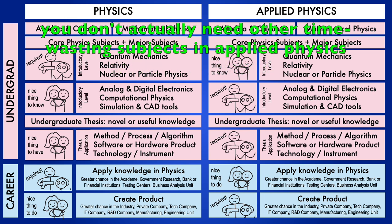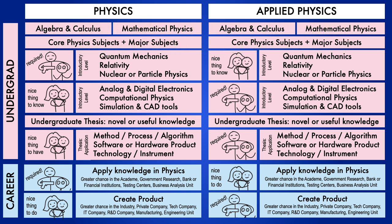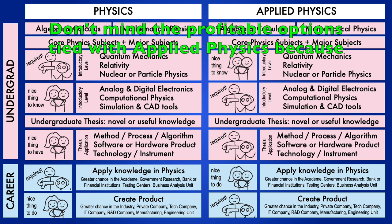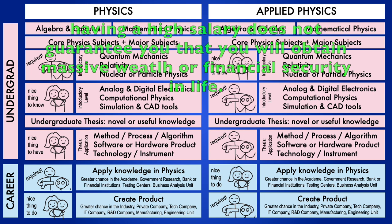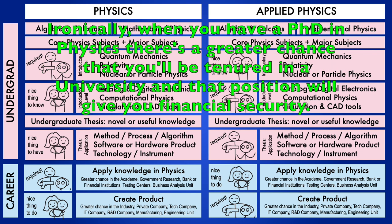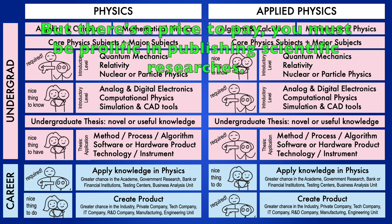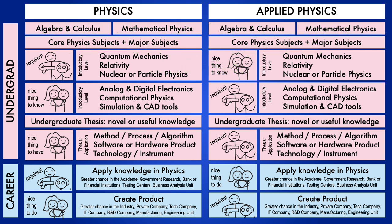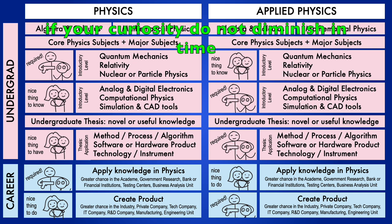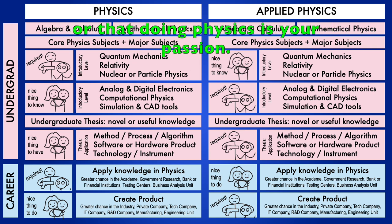You don't actually need other shenanigan subjects in Applied Physics. Don't mind the profitable options tied with Applied Physics because having a high salary degree does not guarantee you will obtain massive wealth or financial security in life. Ironically, when you have a PhD in Physics, there's a greater chance that you'll be tenured in a university and that position will give you financial security. But there's a price to pay. You must be prolific in publishing scientific researches. I guess publications won't be an issue if your curiosity do not diminish in time or that doing physics is your passion.